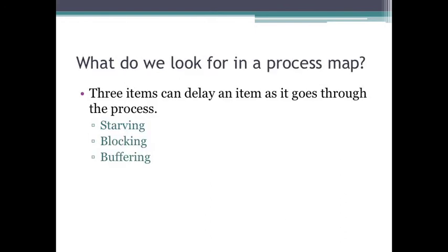Ultimately, what we wish to do with this process is see where the product is being held up, where the customer perhaps is being held up. There are three different ways that an item — which could be a product we're making or a customer moving through our process — can be delayed as it goes through the process. The first is what we call starving, the second is blocking, and the third is buffering. Those three ways in which a flow unit is delayed as it goes through the process will be discussed in the next video.